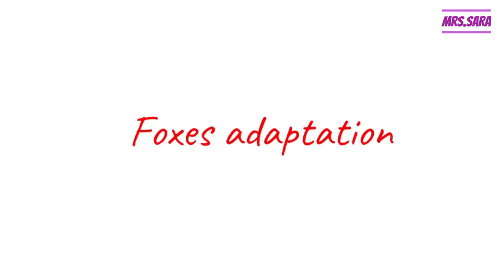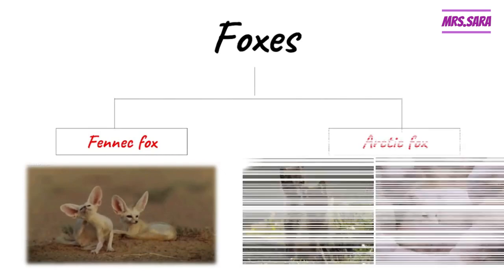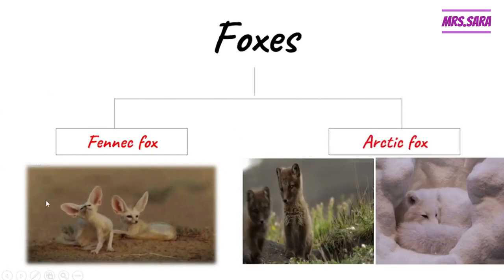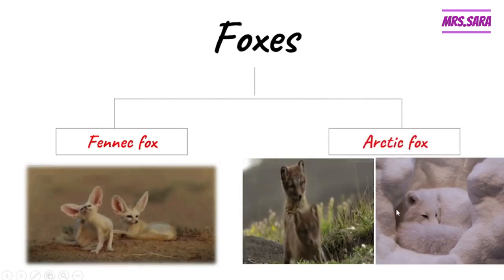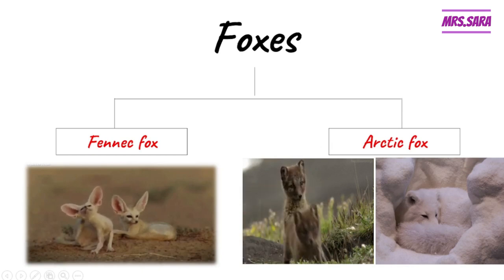Now we're going to talk about foxes' adaptation. We have two types of foxes, Primary 4: the fennec fox, which we talked about before, and the arctic fox. As you can see, we have two colors of arctic fox — let's find out why.